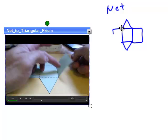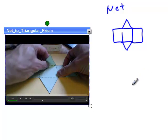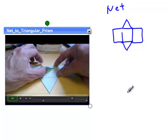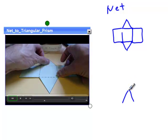As you see, I'm folding it together to create the three-dimensional image, which is a triangular prism. It's going to end up looking like this.